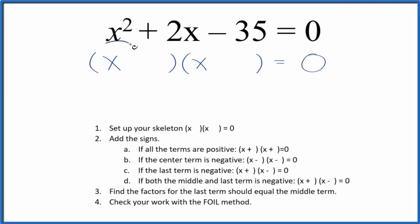I was asked to factor the equation x squared plus 2x minus 35 equals 0. So let's give it a try.